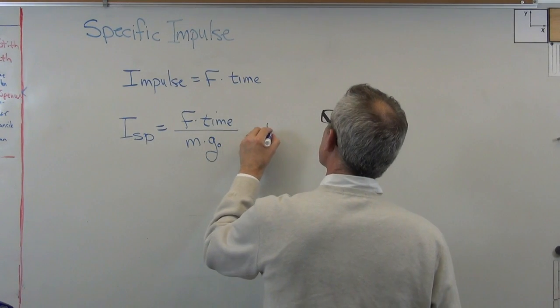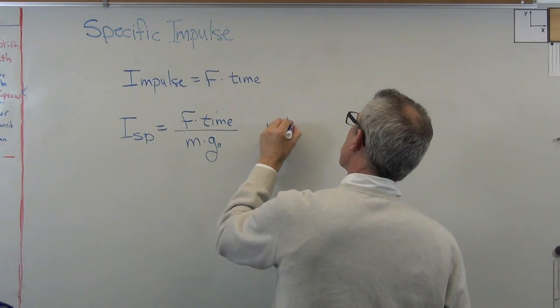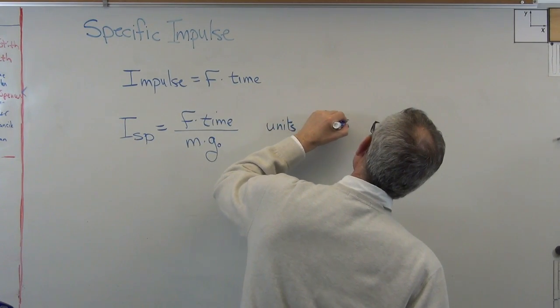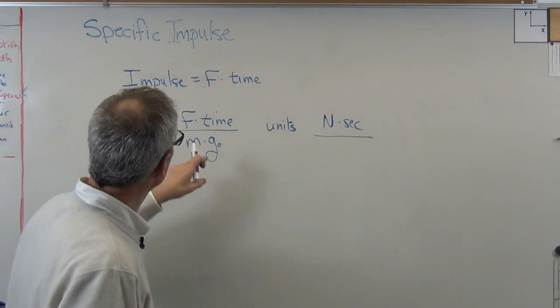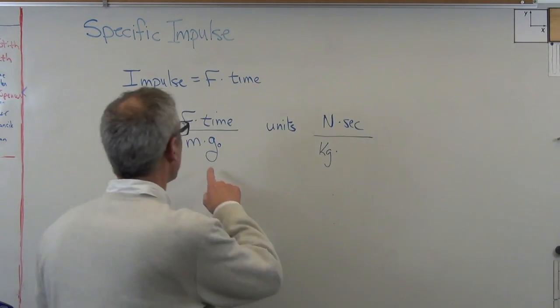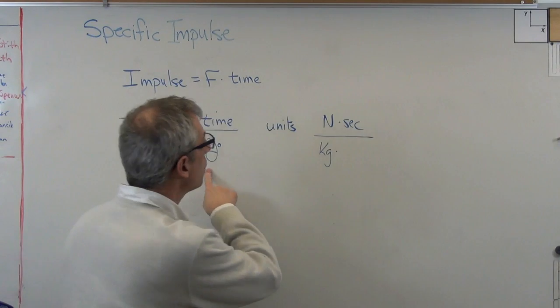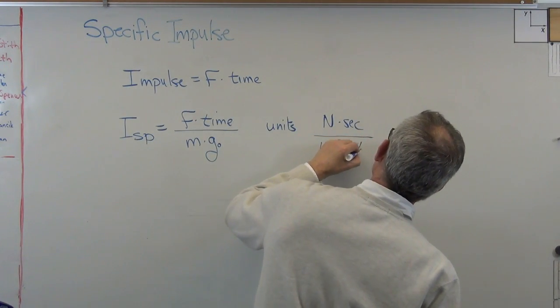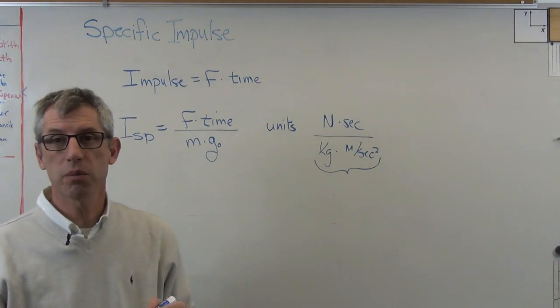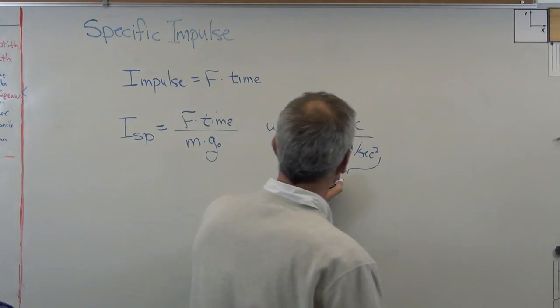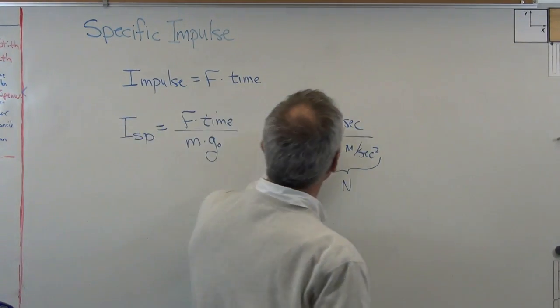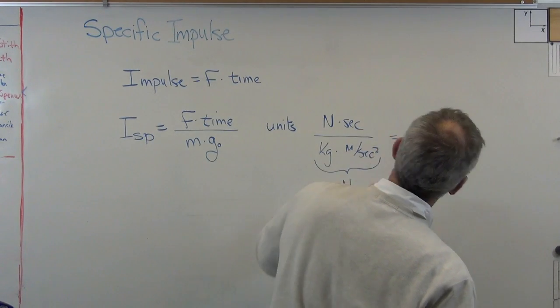All right, so let's look at the units on this. Well, we've got newtons times seconds in the numerator. The denominator, we've got kilograms, and then over here we've got meters per second squared. So I'll put that in here too. And notice something about that denominator, kilogram meters per second squared. That's a newton, okay? F equals MA. Well, if that's MA, it has to equal F.